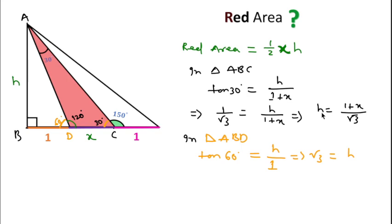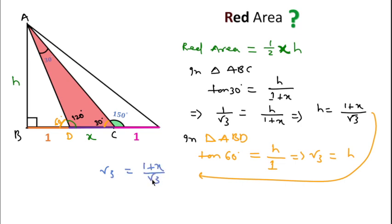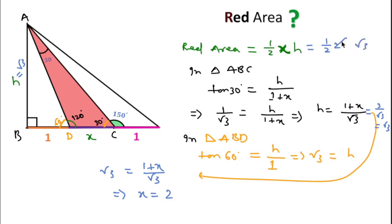Substituting h = √3 into our equation: √3 = (1 + x)/√3, which gives 3 = 1 + x, so x = 2. We can verify: (1 + 2)/√3 = 3/√3 = √3, confirming h = √3. The final area is 1/2 × 2 × √3, and the 2s cancel, giving red area = √3.